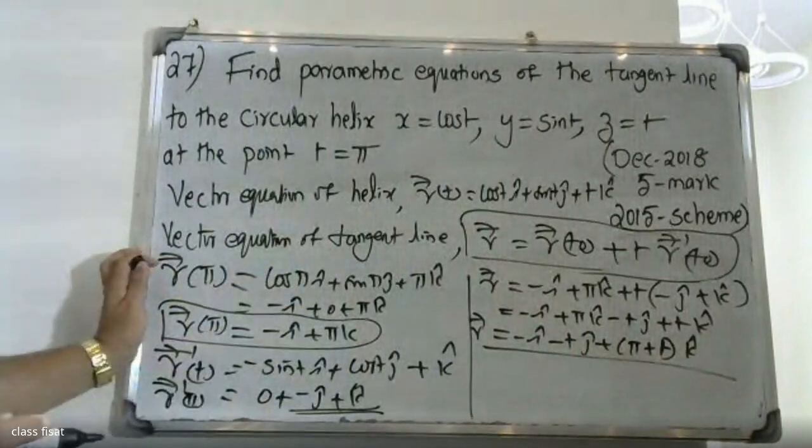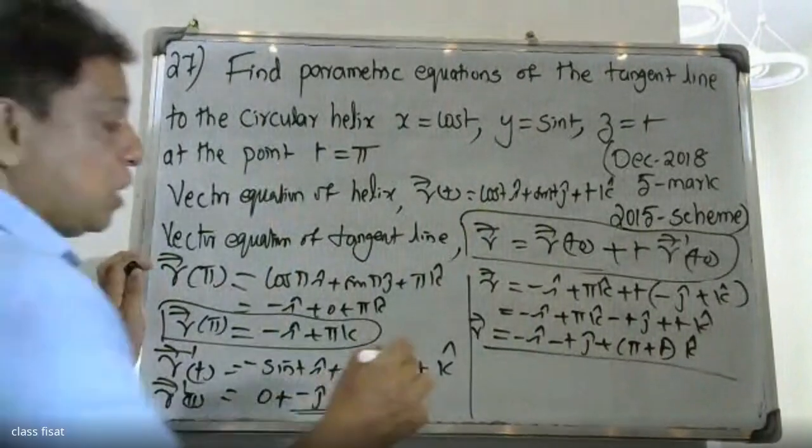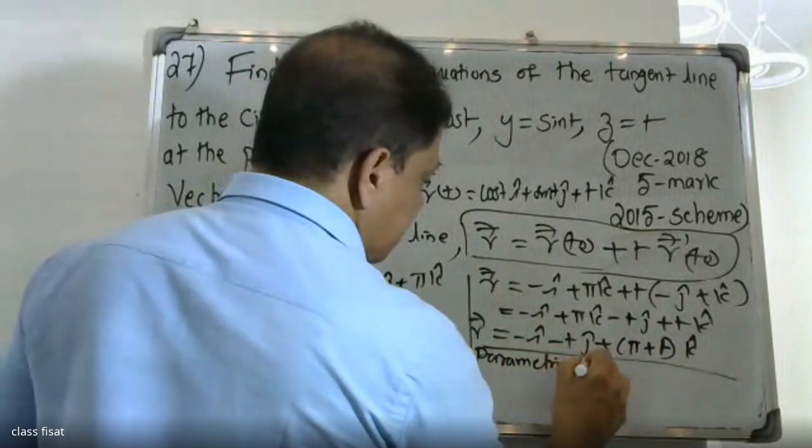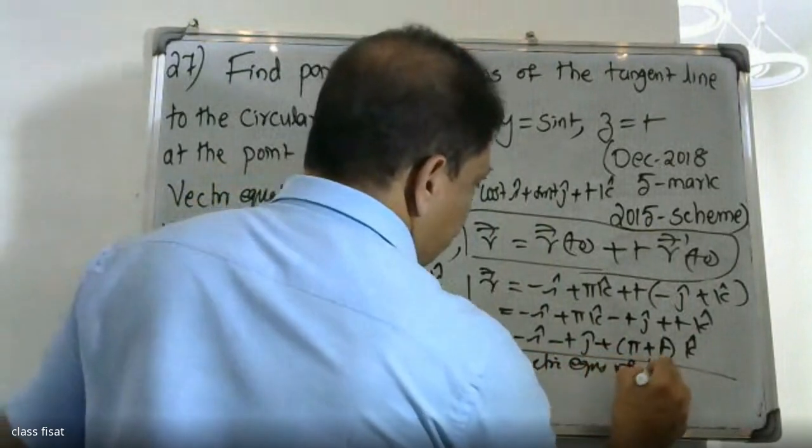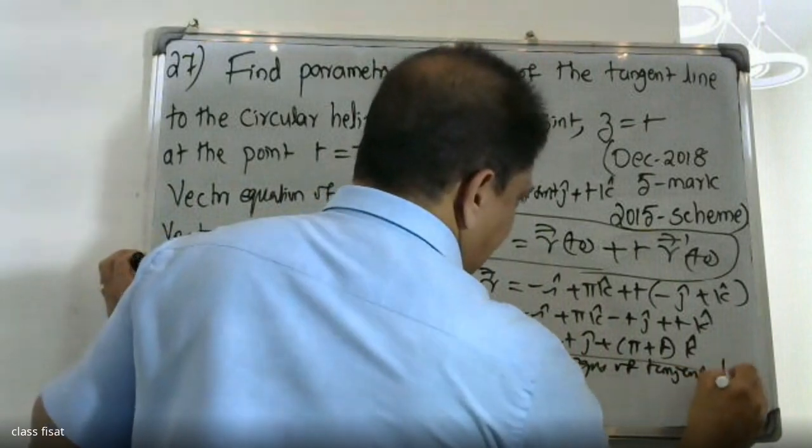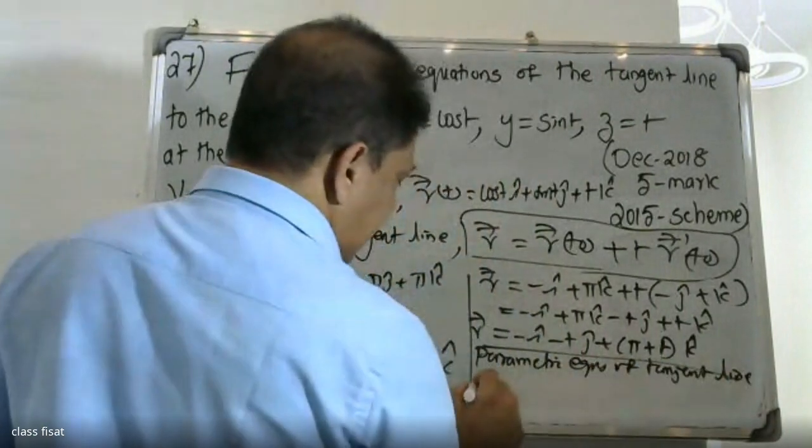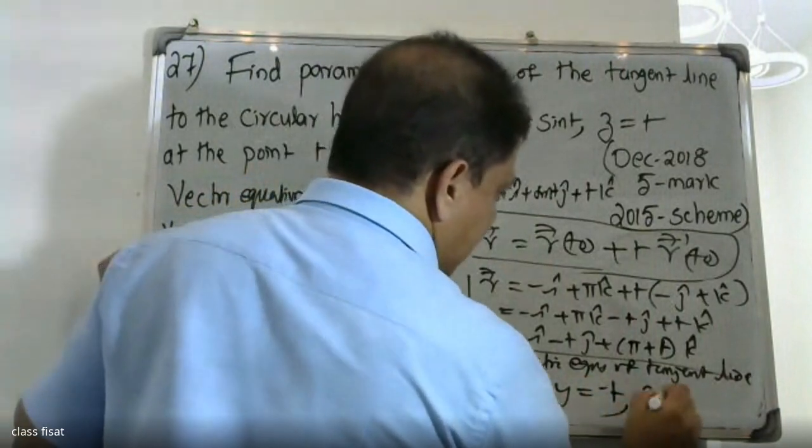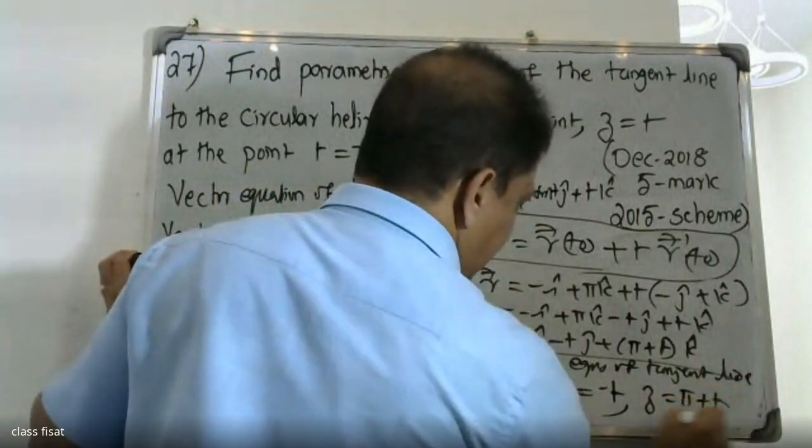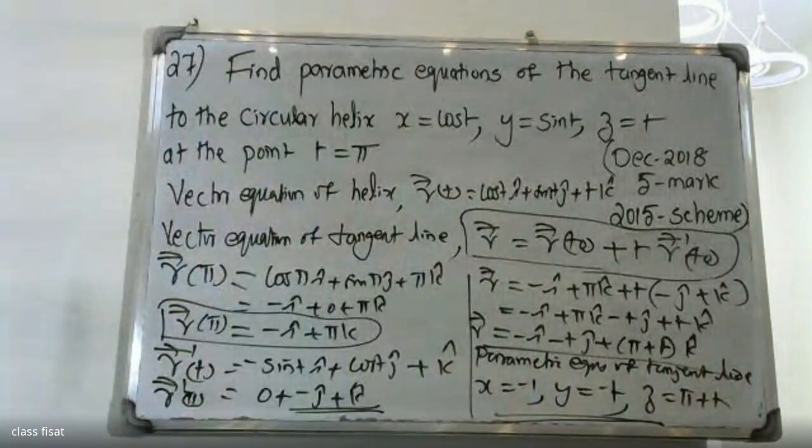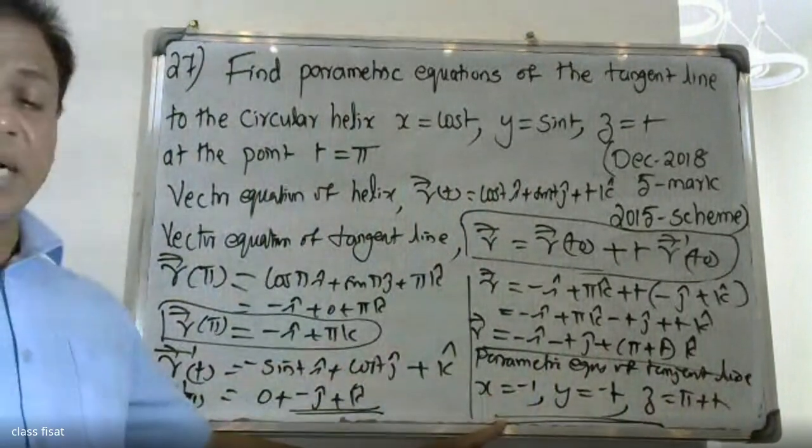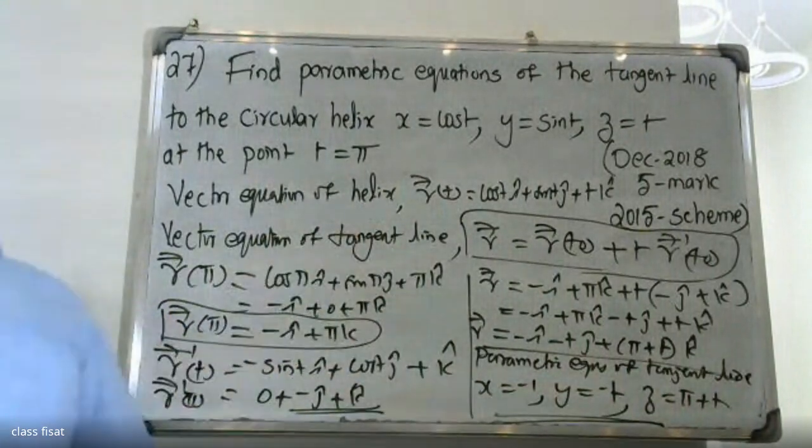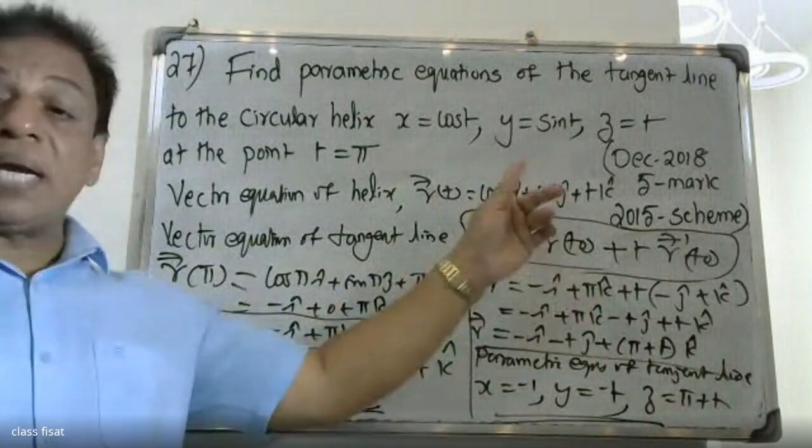Therefore parametric equations of tangent line: x equals minus 1, y equals minus t, z equals π plus t. This is the final answer. Any problems?